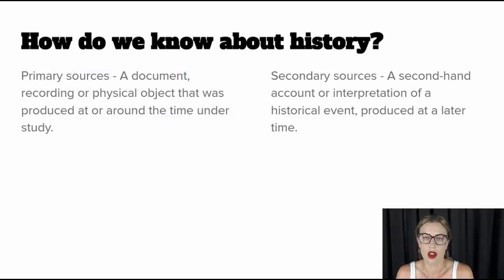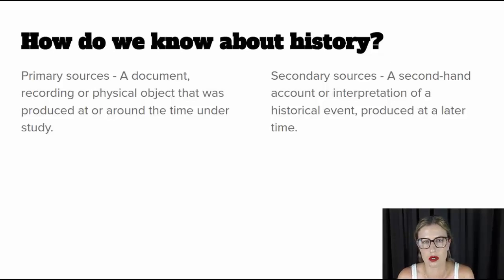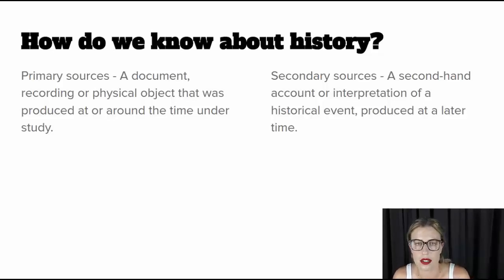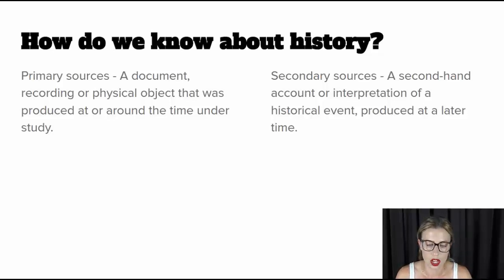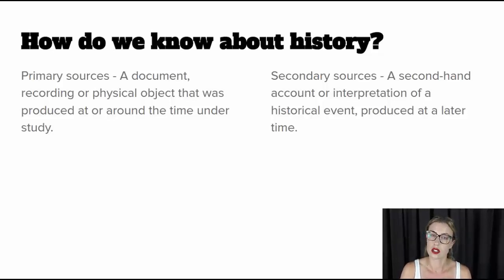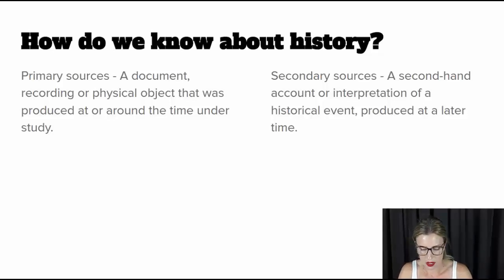Just a quick rundown of the important terms you need to know in history. Basically, we have two types of historical sources. Firstly, there's primary sources — a document, recording or physical object that was produced at or around the time under study. So this might be a newspaper article, a news segment, journals, eyewitness accounts, diaries, letters, photographs, or historical artefacts such as clothing, art, or literature — something that was produced within a couple of years of the time under study.